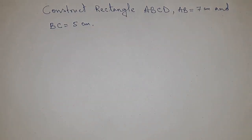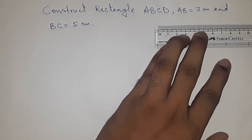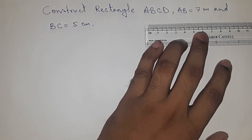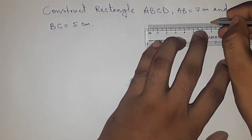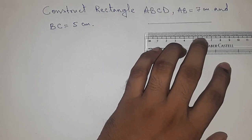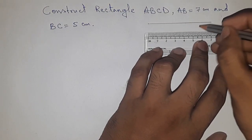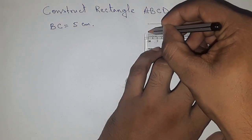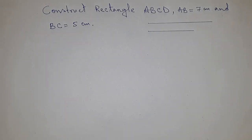Today we will learn how to construct a rectangle ABCD with sides 7 centimeters and 5 centimeters. First of all, draw the sides 7 centimeters here and 5 centimeters also here. These are the two sides of the rectangle.